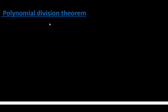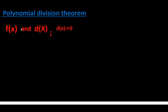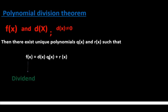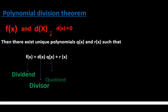In this video we're going to go over the polynomial division theorem and remainder theorem. Consider any two polynomial functions f(x) and d(x), where d(x) is different from zero and the degree of f(x) is greater than or equal to the degree of d(x). Then there exist unique polynomials q(x) and r(x) such that f(x) = d(x)·q(x) + r(x), where f(x) is the dividend, d(x) is the divisor, q(x) is the quotient, and r(x) is the remainder.